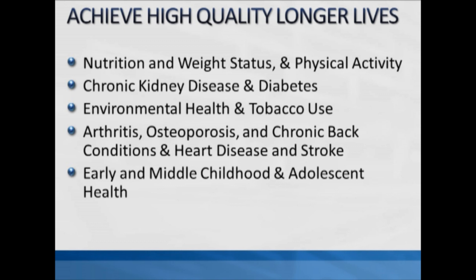Chronic kidney disease and diabetes are very much tied together, and type 2 diabetes is intimately tied with weight status — 90 to 95 percent of type 2 diabetics are actually overweight or obese. Osteoporosis, arthritis, chronic back pain, and heart disease and stroke are all tied to some degree to obesity. Early, middle childhood and adolescent health is also addressed, focused on the growing prevalence of obesity in this group by introducing exercise, healthy eating, and healthy behaviors.